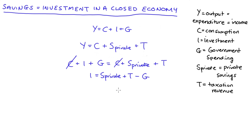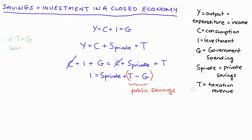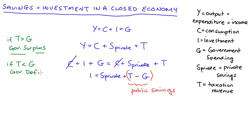Now the difference between T and G — that's the difference between the revenue the government gets and how much they spend — is actually equal to public savings. If tax revenue is greater than government expenditure, there will be a government surplus, that's positive savings. Alternatively, if government spending is larger than tax revenue, this becomes negative and we get a government deficit. Regardless of the sign, the difference between the two variables is public savings.